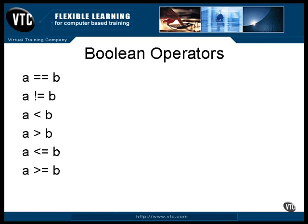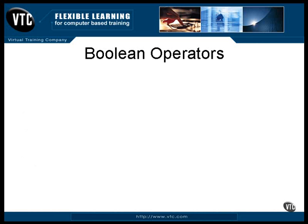Now, there is one more operator. It looks more like a method or something than it does an operator, but it is an operator in the Java language. It results in true if the object A is an object of the class B. There is some polymorphism stuff involved here, so I'll explain it in a better context later. Anyway, those are the comparison operators.